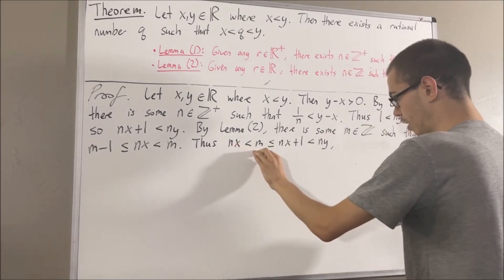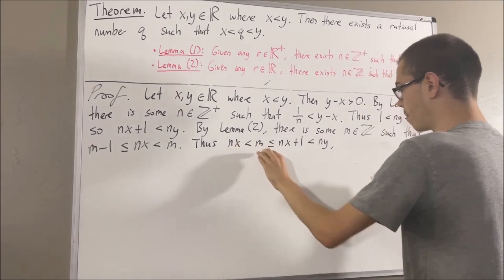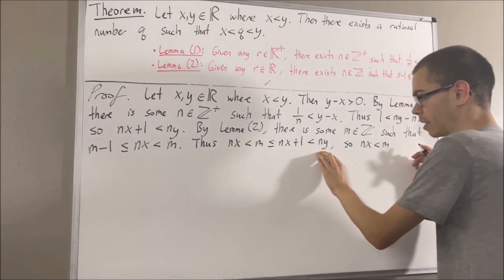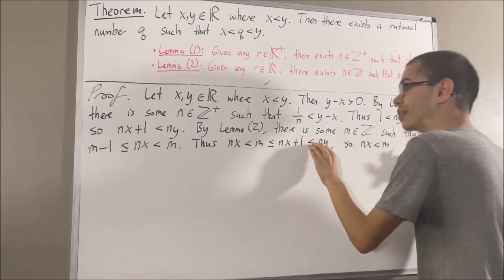This portion of the inequality tells us that nx is less than m. And this portion of the inequality tells us that m is less than ny.